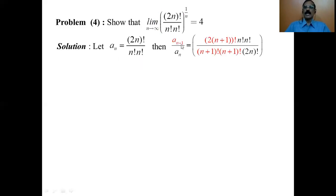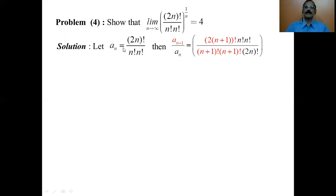We have to find the ratio a_{n+1} by a_n. For a_{n+1}, replace every n by n+1 in a_n, giving 2(n+1) factorial in the numerator and n+1 factorial times n+1 factorial in the denominator. Since a_n is in the denominator of the ratio, we write its reciprocal: n factorial times n factorial divided by 2n factorial.